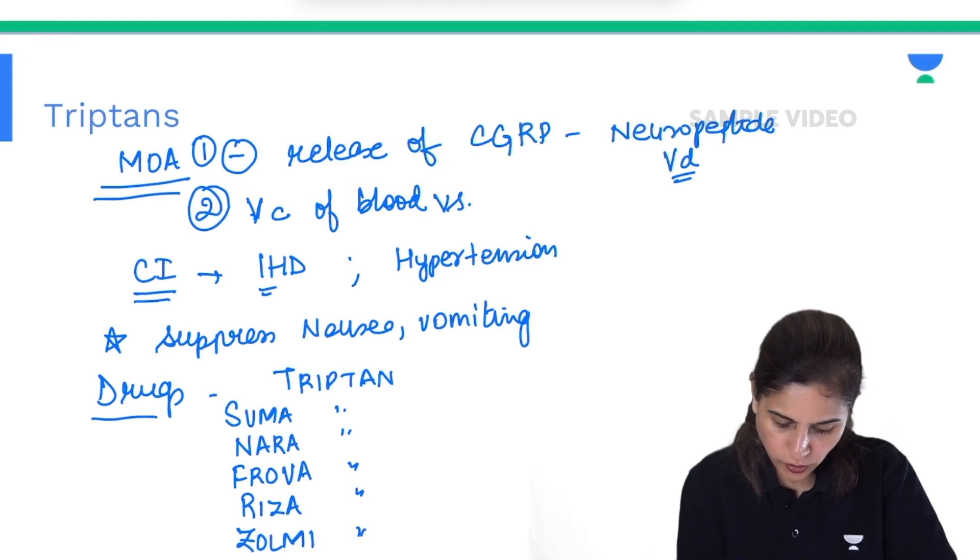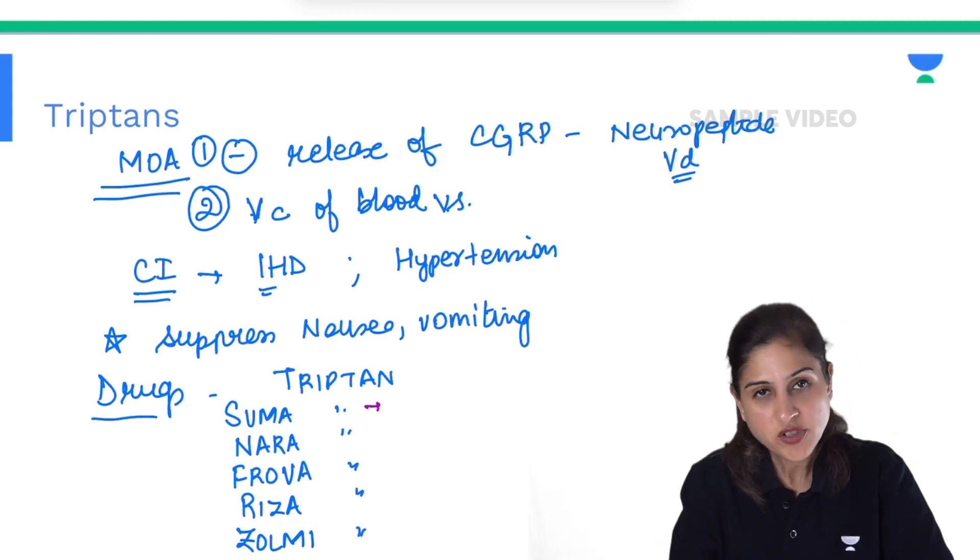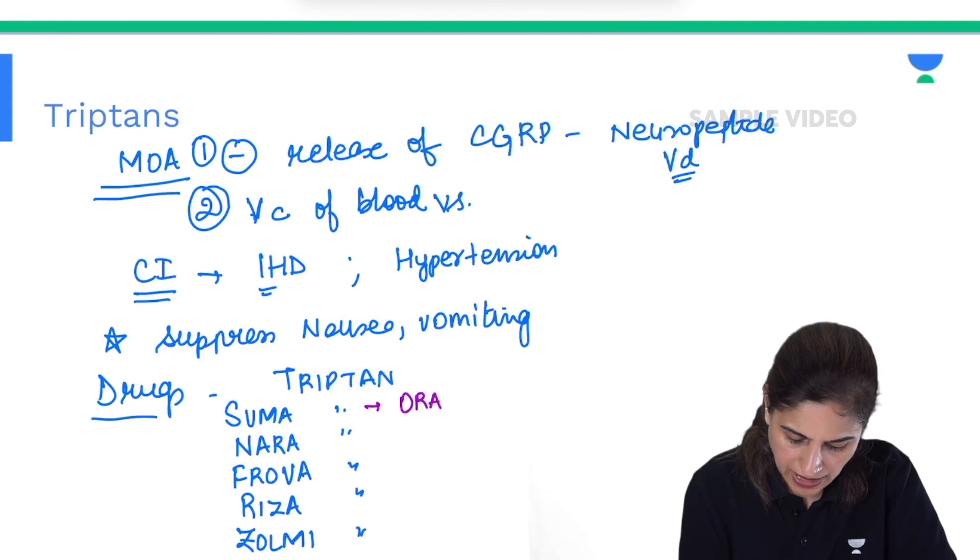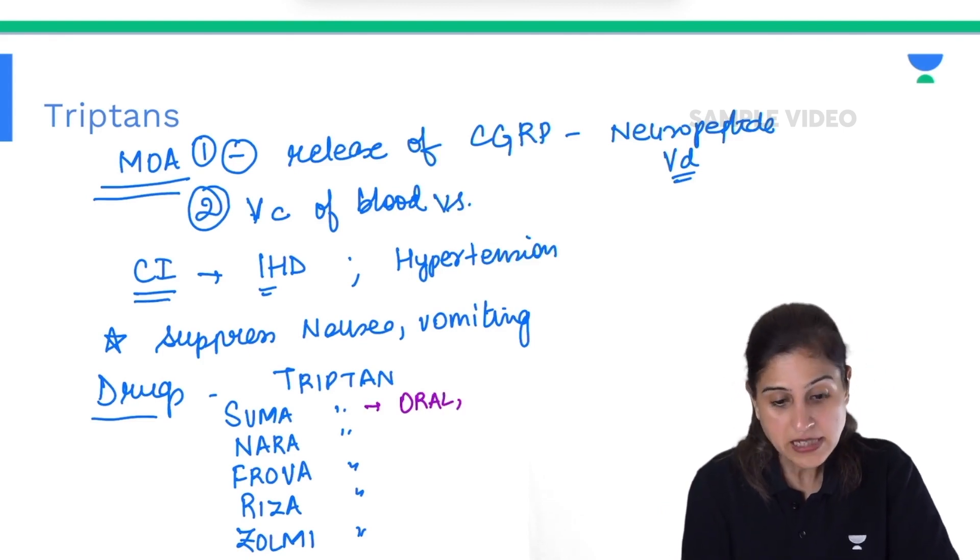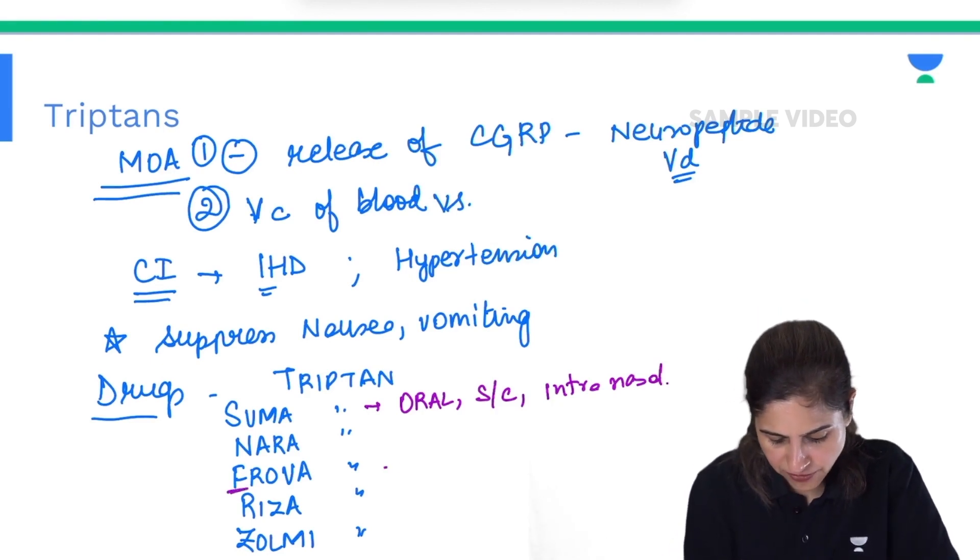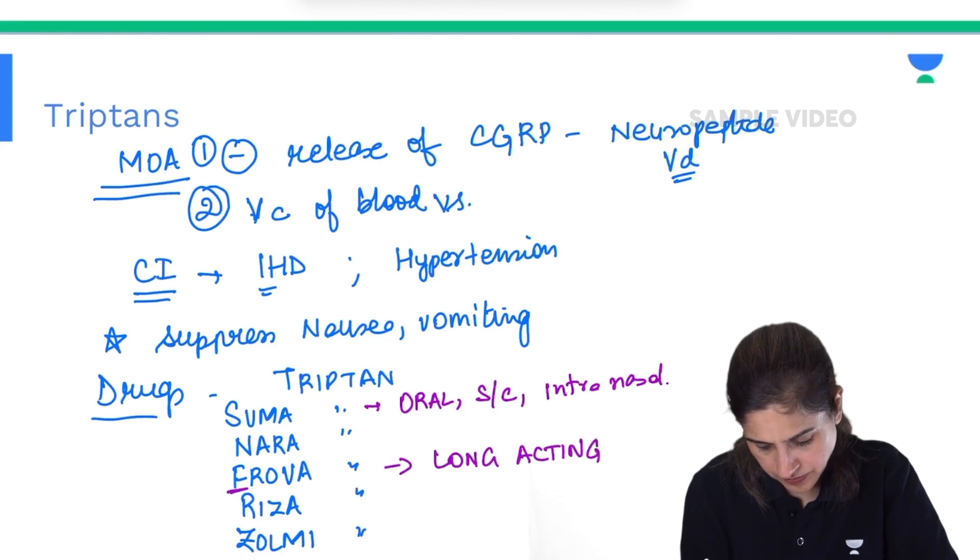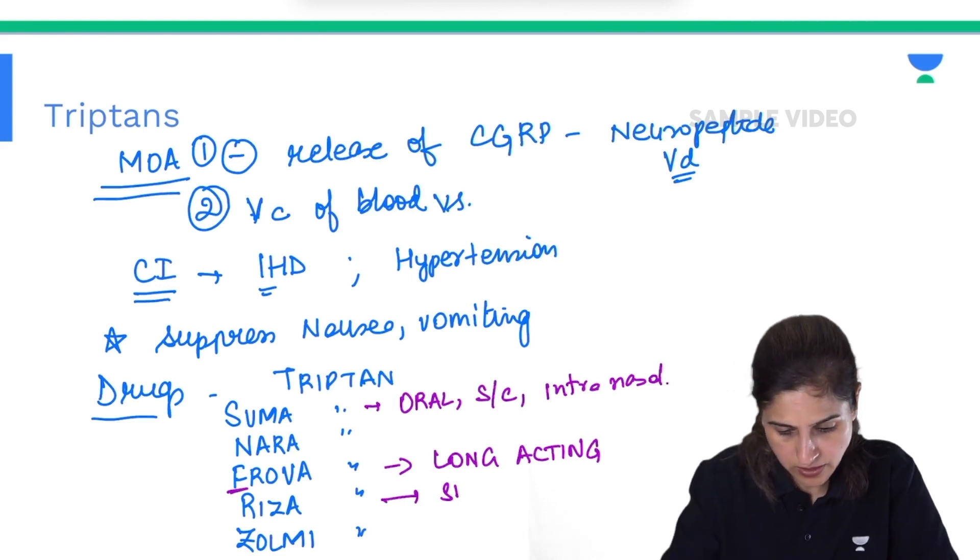A few points about these drugs: Sumatriptan is available as oral dosage form, subcutaneously, and intranasally. Frovatriptan - it goes far - is the longest acting. And rizatriptan is the fastest acting out of the lot.